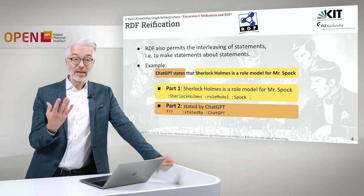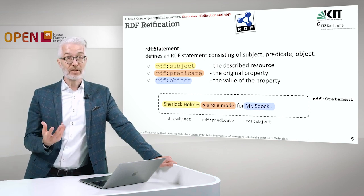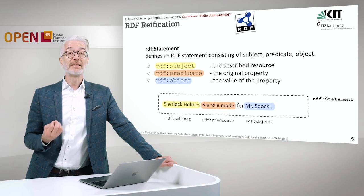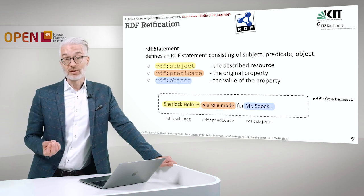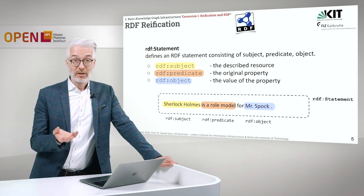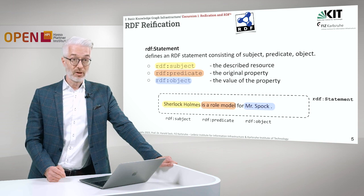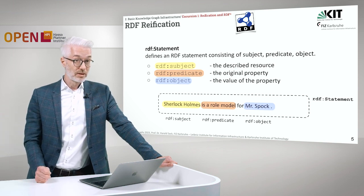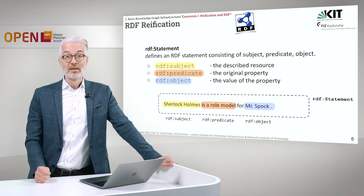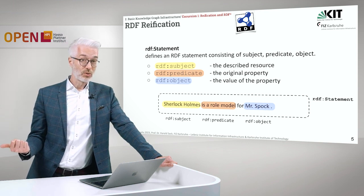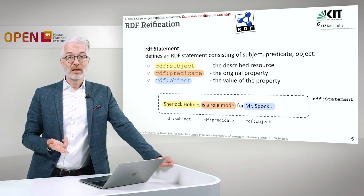If I want to make a statement about a statement, this process is called reification in RDF. In RDF, you can define a statement using the keyword RDF statement, which consists of a subject, a predicate, and an object. For that, there are three keywords: RDF subject, RDF predicate, and RDF object. So the subject is the described resource, the original property is encoded via RDF predicate, and you have the RDF object.